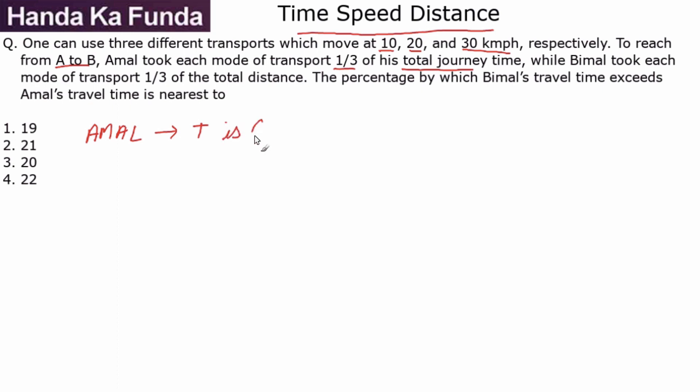So Amal is keeping the time as constant, while Bimal took each mode of transport for one-third of the total distance, which means for Bimal the distance that he has for the three types of journeys is constant. Then the percentage by which Bimal's time exceeds Amal's travel time is nearest to what?